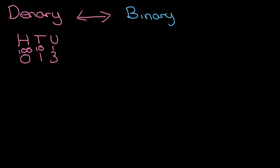The key to understanding binary is it's the same trick — exactly the same trick. We have units, we still get the idea of one, except instead of going up in tens and hundreds, we double each time. So we have one, two, four, eight.